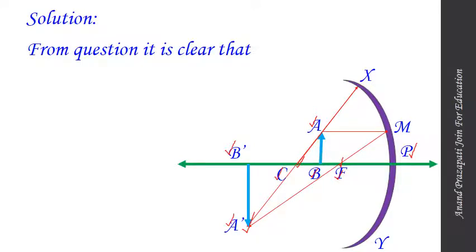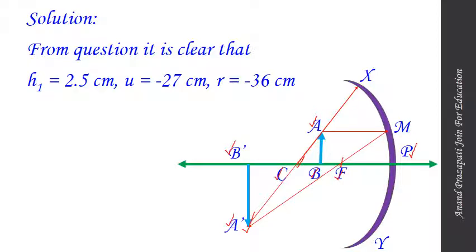From the question, the height of the object, generally denoted by H1 or AB, equals 2.5 cm. The object distance, generally denoted by U and equal to PB, is minus 27 cm. The radius of curvature, generally denoted by R and equal to PC, is minus 36 cm according to the figure.